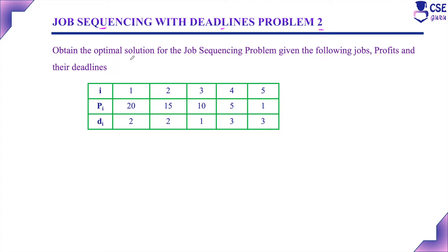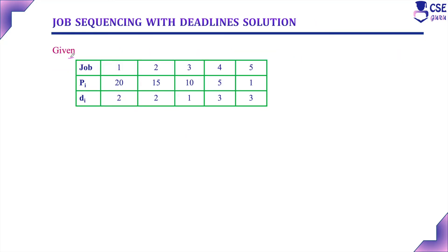This is the second example. Obtain the optimal solution for the job sequencing problem given the following jobs, their profits, and their deadlines. There are 5 jobs, so n equals 5. Job 1: profit 20, deadline 2. Job 2: profit 15, deadline 2. Job 3: profit 10, deadline 1. Job 4: profit 5, deadline 3. Job 5: profit 1, deadline 3.